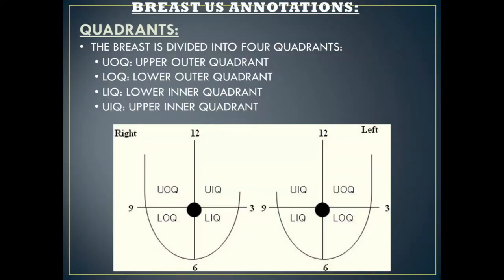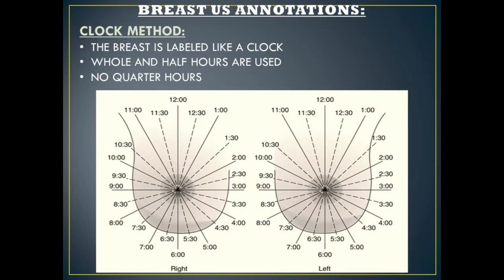The first method of annotating a breast ultrasound is the quadrants method. This is where each breast is split into four quadrants: the upper outer quadrant, the lower outer quadrant, the lower inner quadrant, and the upper inner quadrant.